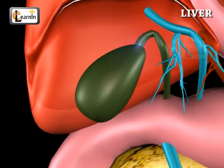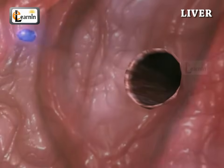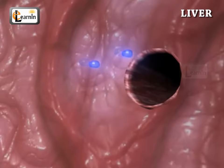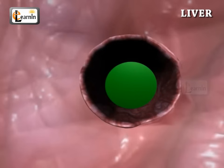This juice is stored in the gallbladder between meals. During meals, it is squeezed out of the gallbladder through the bile ducts and into the intestines to mix with the fat in the blood through the bile ducts.